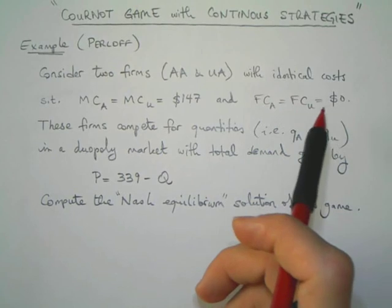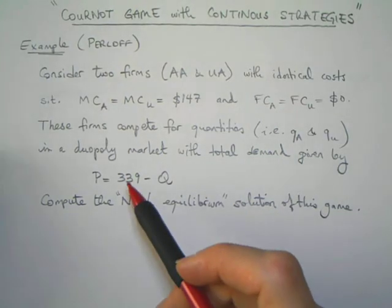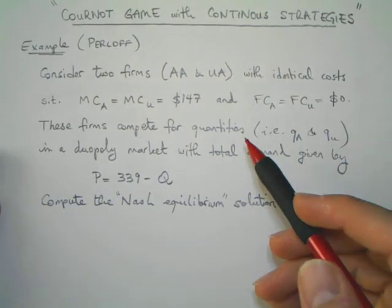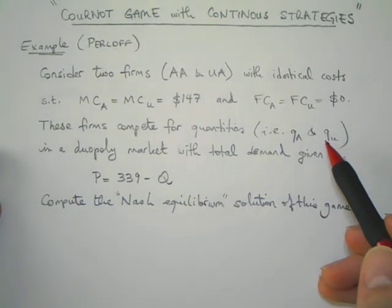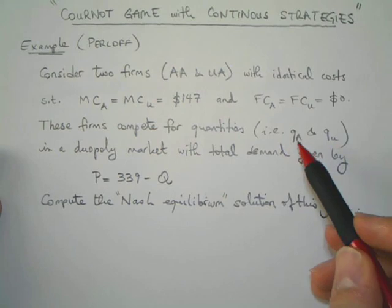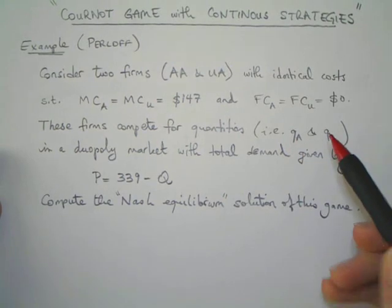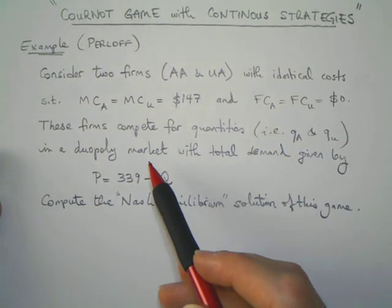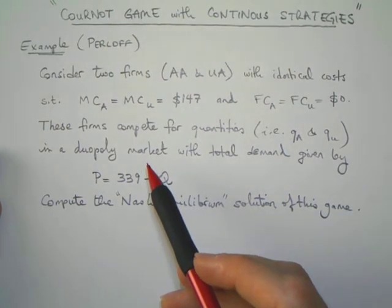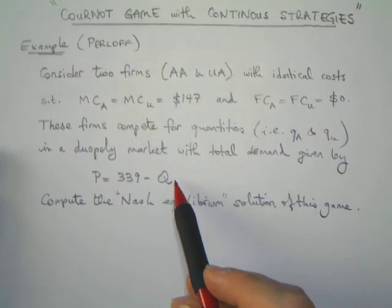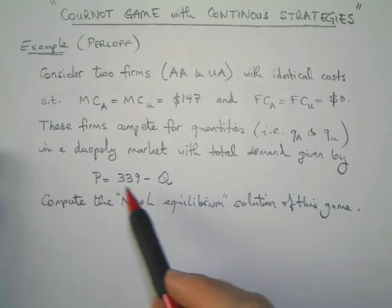We assume that the fixed costs are zero for simplicity. These firms compete for quantities QA and QU. They have to decide on how much to produce based on their rivals' choices in a duopoly market, which means there is no entry or exit.